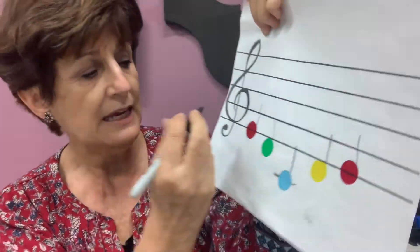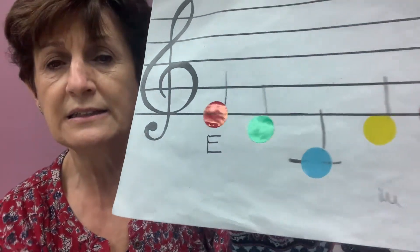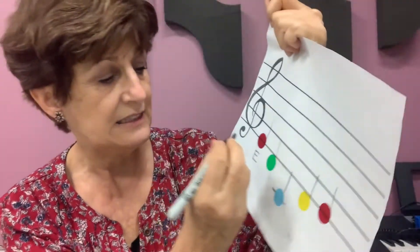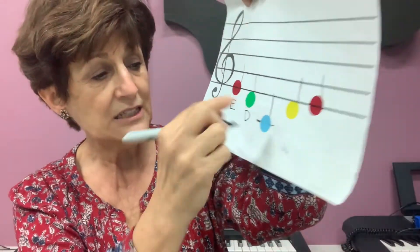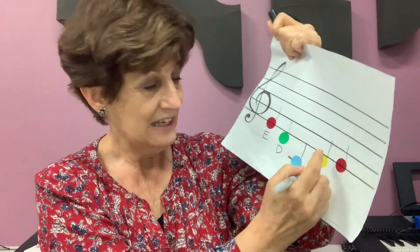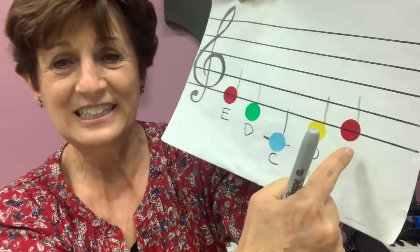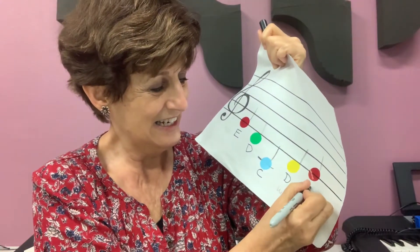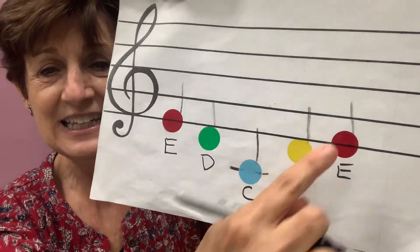Who's this one? E. So I can put here the letter E. That way I know that you know the letters. And who's this one? Sticky D. So I put the letter D. And who's this one? C. And who's this one? D. And who's this one? E. So this is my song. E, D, C, D, E.